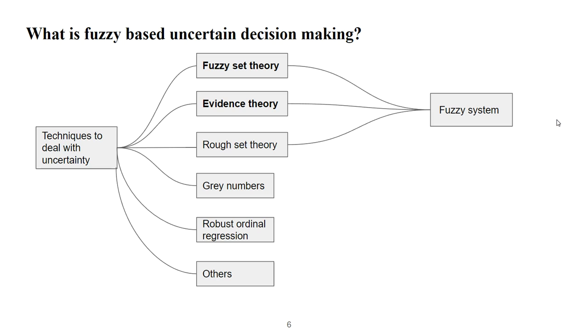Actually, many theories had been proposed to deal with uncertainty and they all model uncertainty in different ways. The first three were fuzzy theory, evidence theory, and rough set theory, are always included in fuzzy systems.